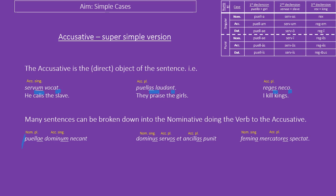In the fourth sentence, the puellae are killing a dominum. How do we know? We know that nominative is doing something and accusative is having it done to it, so it must be the girls kill the master. Fifth sentence: the dominus is punishing the servos and anculas — it's not that the master and the slaves are doing something together. The accusatives are the ones having the thing done to them, so it must be that the master is punishing the slaves and slave girls. Last sentence: the woman is watching the merchants.